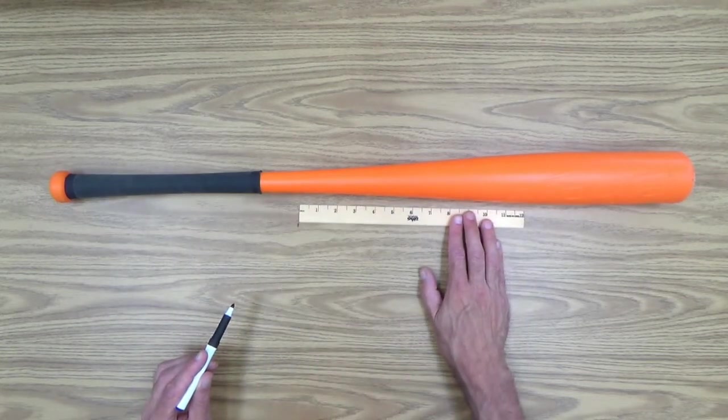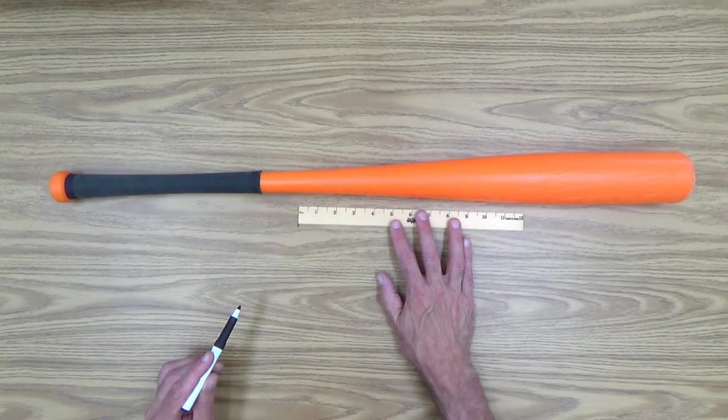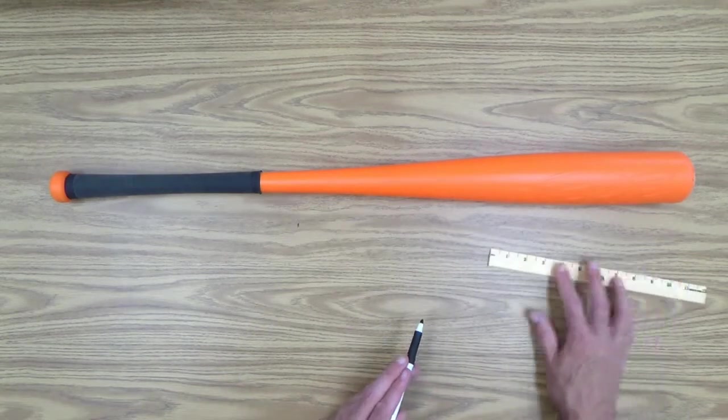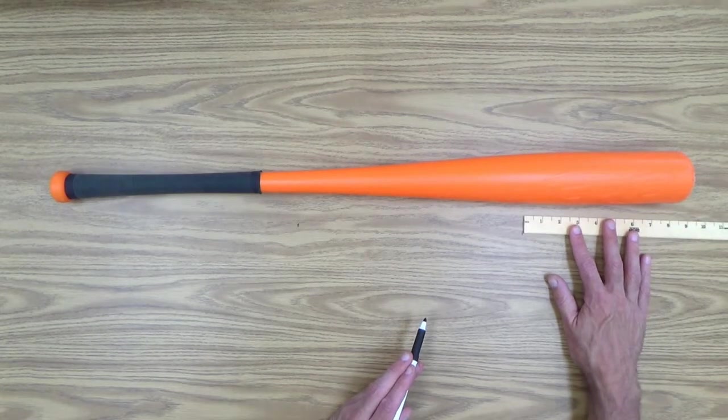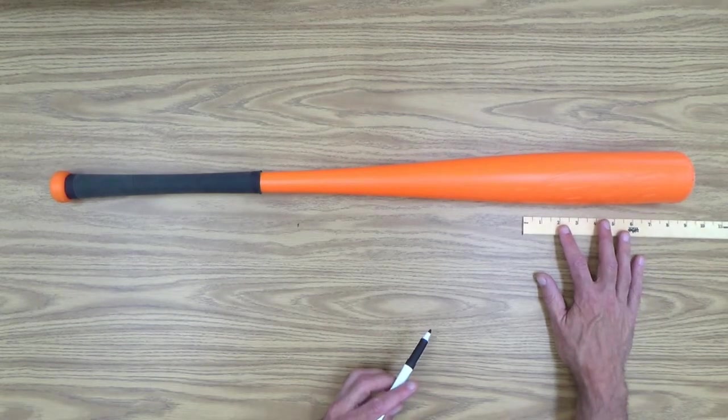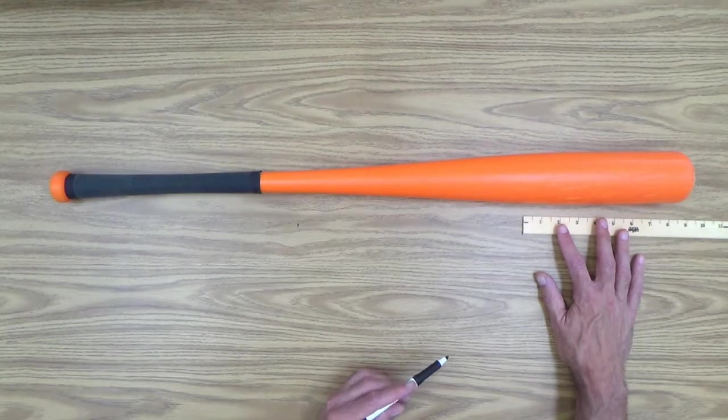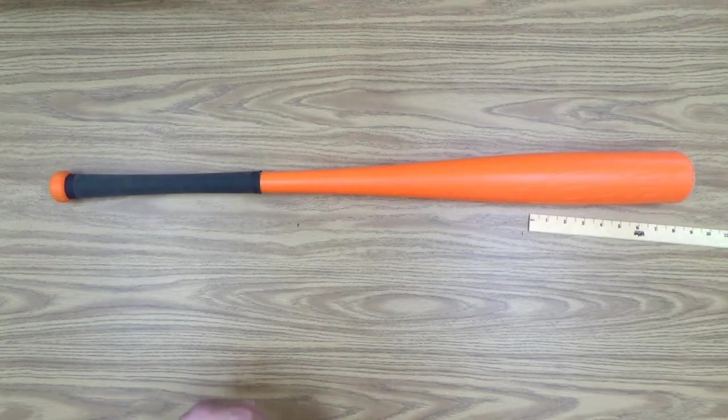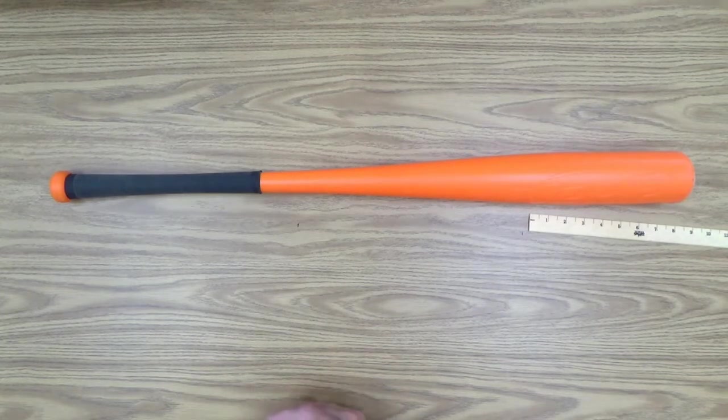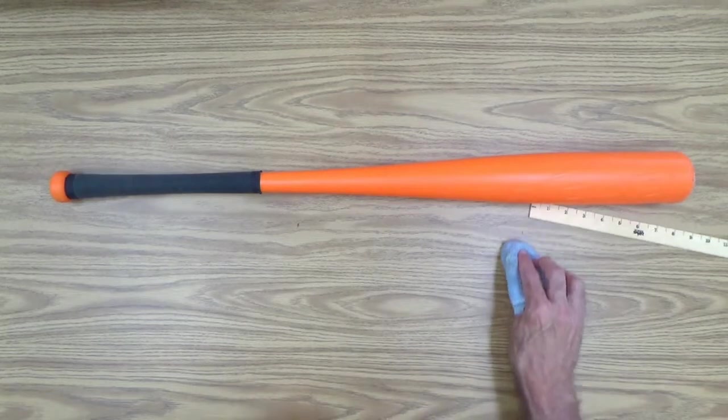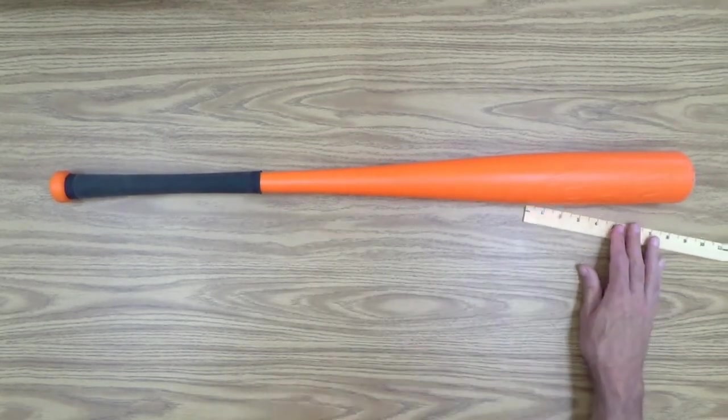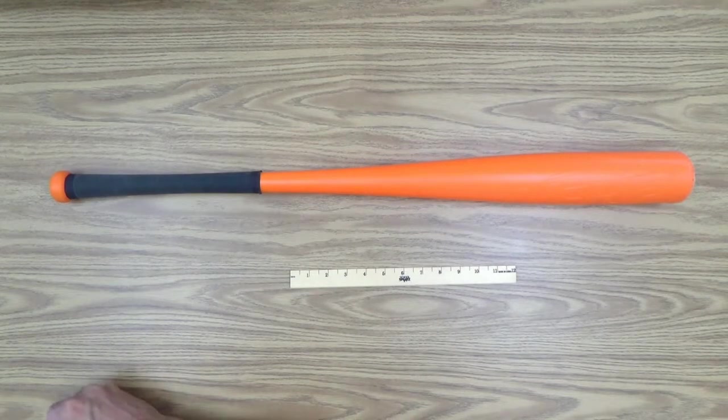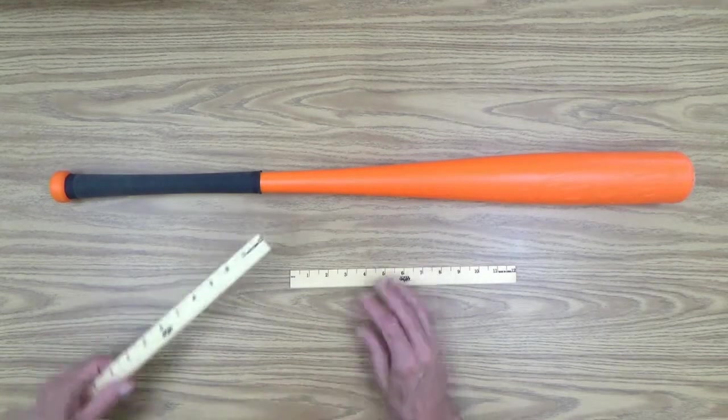So I'm going to mark the edge of this ruler, and then bring this one over and put it right where I marked it. So there's two, make a mark at the edge. And there's the next eight inches on the third ruler. So a total of 32 inches. So that's called marking off.